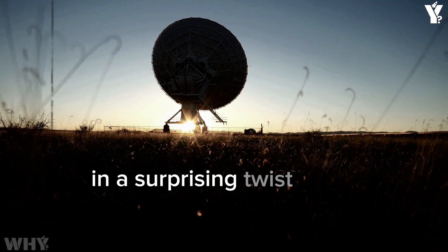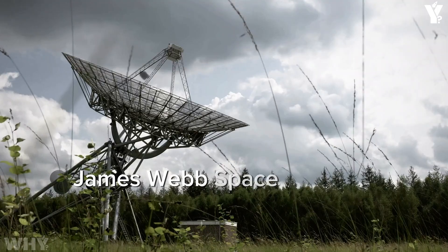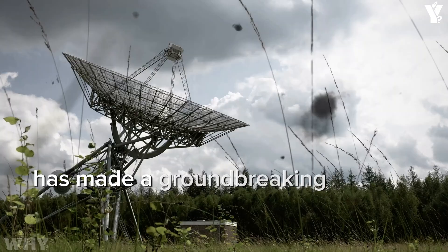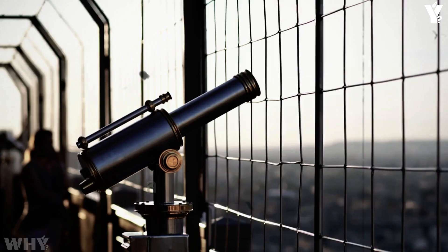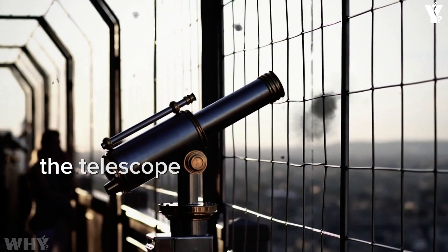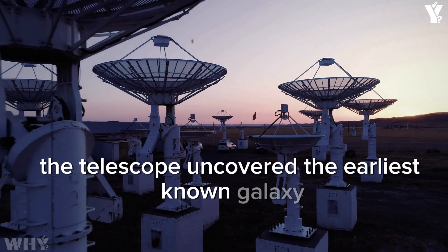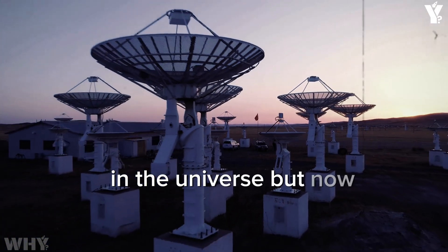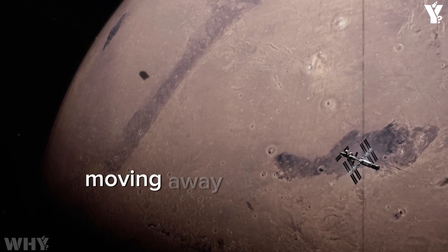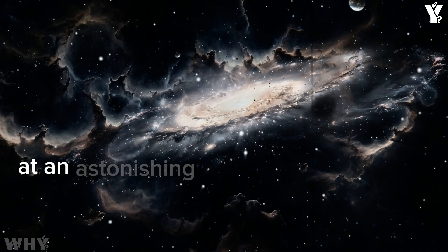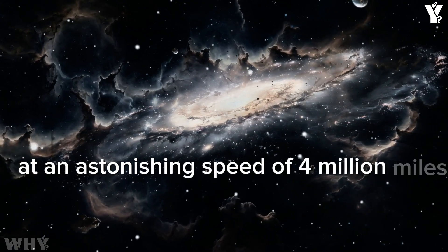In a surprising twist, NASA's James Webb Space Telescope has made a groundbreaking discovery that has left astronomers worldwide in awe. A few weeks ago, the telescope uncovered the earliest known galaxy in the universe, but now it has detected something even more extraordinary: a supermassive black hole moving away from its galaxy at an astonishing speed of 4 million miles per hour.